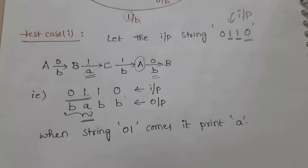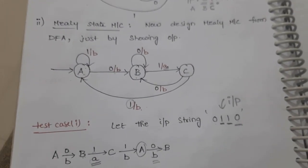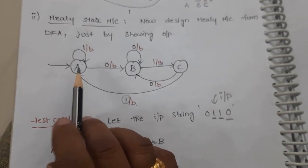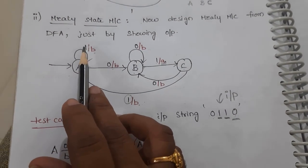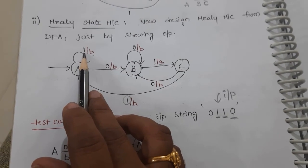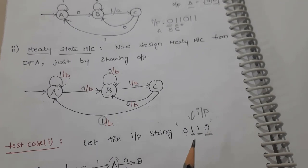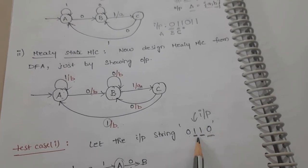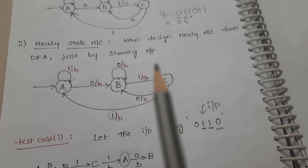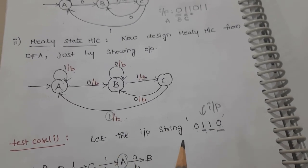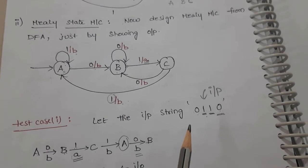So that is how we construct the Mealy machine. A Mealy machine consists of states where outputs are associated with their inputs. We clearly identify our objective and based on that construct the state machine — either a Moore machine or a Mealy machine. I hope you understand. Thank you.